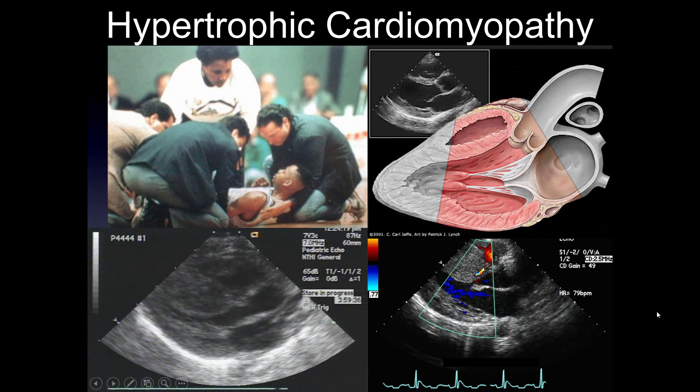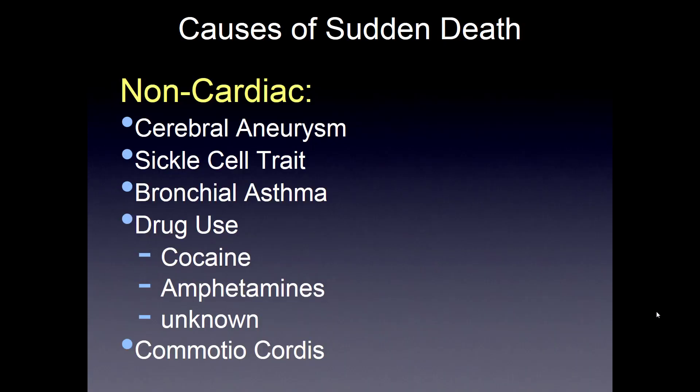Hypertrophic cardiomyopathy is frequently the cause. This slide depicts the thickening of the ventricular wall and the abnormal rhythm. The non-cardiac causes include cerebral aneurysm, sickle cell trait, and acute bronchial asthmatic attack. We can have drug-induced sudden causes of death — cocaine, amphetamines, or unknown substances — and the cardiac concussion that happens with blunt trauma to the chest.